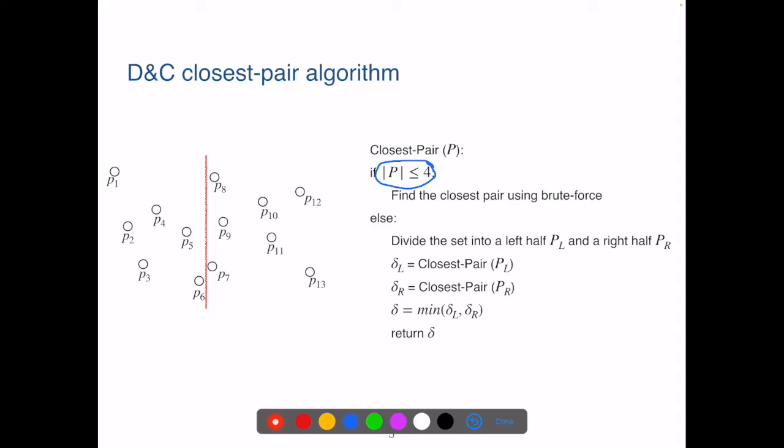Then we divide the set of points into two halves based on their x-axis values. Call the same algorithm on both halves. Compare the results of the two halves and return the distance of the smaller one.